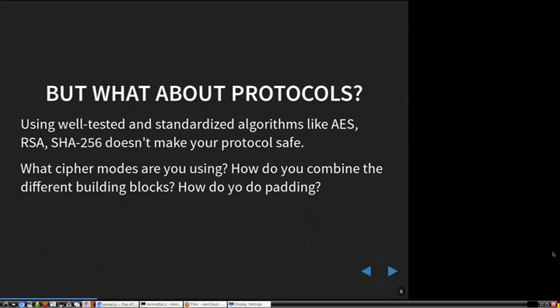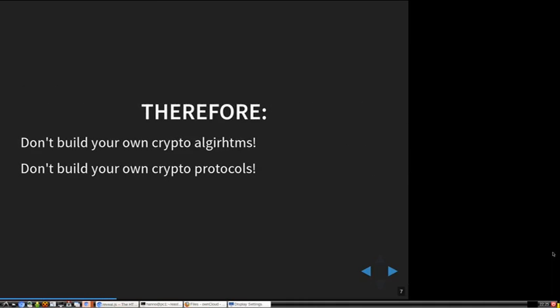SSL version 3's building blocks are mostly quite okay — it uses RSA, and you can use it with AES or Triple DES, which are all secure algorithms. But the whole protocol together has many subtleties, like how you do padding and what kind of modes you're using from those ciphers. I would say we need to interpret the rule to mean you should not build your own crypto algorithms, but you also should not build your own crypto protocols, at least not if you don't know what you're doing.